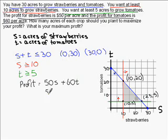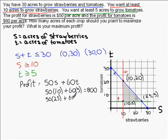So I'll simply sub in each of these combinations and see which one makes me the most money. So 50 times 10 plus 60 times 5 gets me $800. 50 times 25 plus 60 times 5 gets me $1,550. And 50 times 10 plus 60 times 20 gets me $1,700.